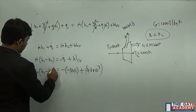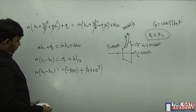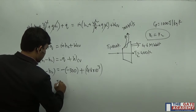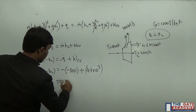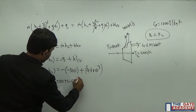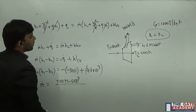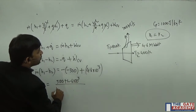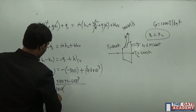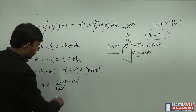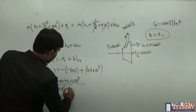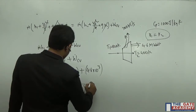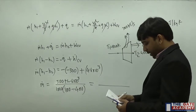So m_dot equals (300 + 4.6 × 10³) divided by (h1 − h2). Since specific heat at constant pressure Cp = 1000 J/kg·K, we write h1 − h2 = Cp × (T1 − T2) = 1000 × (1100 − 400). Simplifying gives us the mass flow rate.